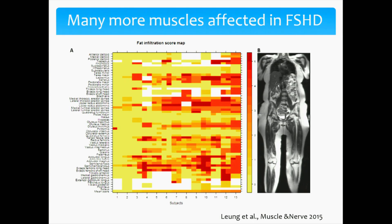This is a whole-body MRI, and muscles are listed from the neck to the ankle. Red means the muscle is affected, and white means not affected. This big group of red here — muscles affected — are muscles of the abdomen and the paraspinal muscles, some of the muscles affected most early and severely in FSHD. These red muscles are the hamstring muscles, the back of the thigh.